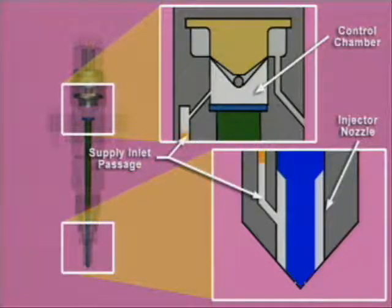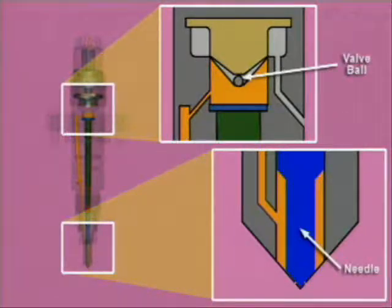At the injector, fuel flows through the supply inlet passage, pressurizing the injector nozzle and the control chamber above the injector plunger. Injection begins when the ECM energizes the coil and allows the valve ball to lift off of its seat.